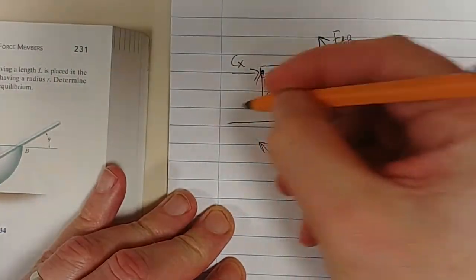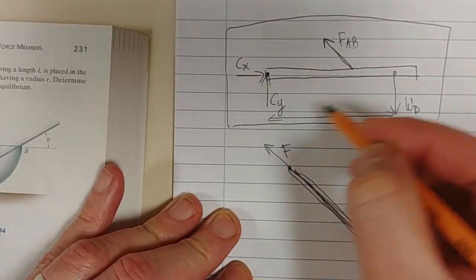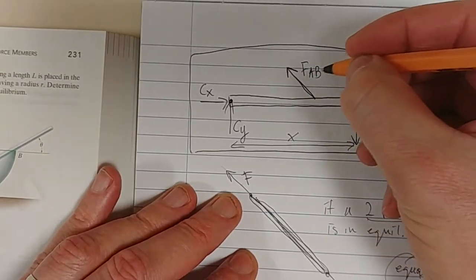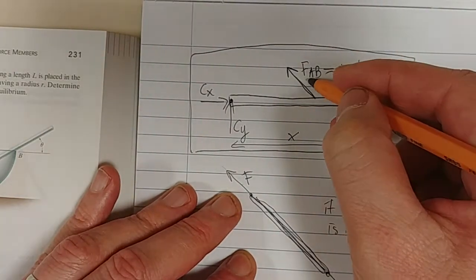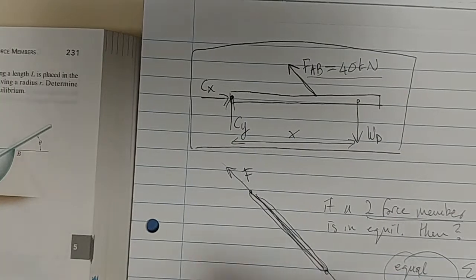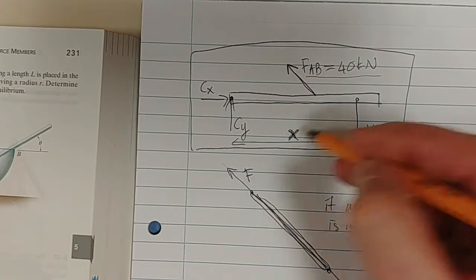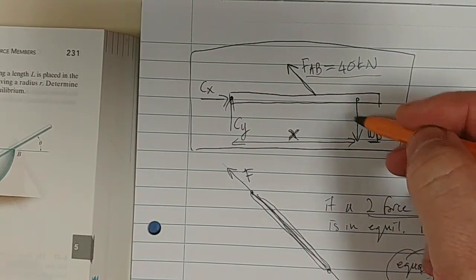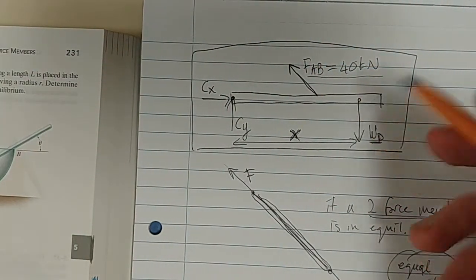We now need to essentially solve for X. We know what FAB is. The maximum that FAB can be is 40 kilonewton. That's the information. That's our limiting force. We know that FAB, the maximum it can be is 40. So now we need to determine this distance X so that it doesn't, so that this force does not cause this FAB to exceed 40 kilonewton.